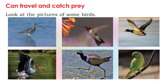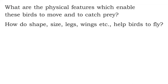Can birds travel and catch prey? Look at the pictures of some birds — some are flying in the air, some are standing on branches, some are standing in water, and some are collecting honey from flowers. What are the physical features which enable these birds to move and to catch prey? How do shape, size, legs, wings, etc. help birds to fly?